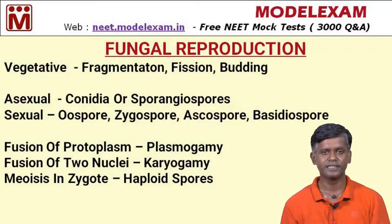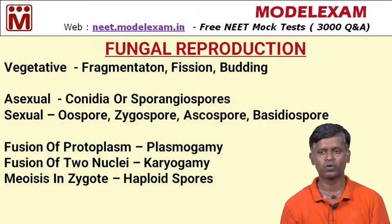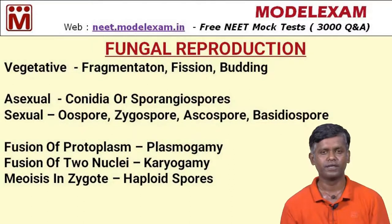Yeast can undergo reproduction by fragmentation, fission, and budding. Asexual reproduction can produce conidia or sporangiospores. By sexual reproduction, fungi produce oospores, zygospores, ascospores, and basidiospores.